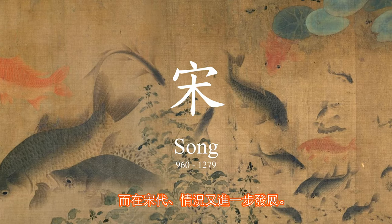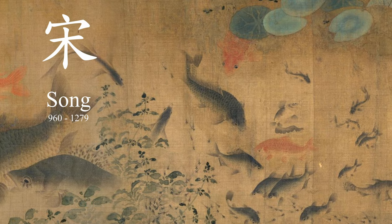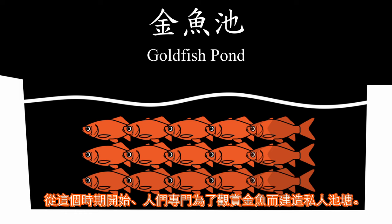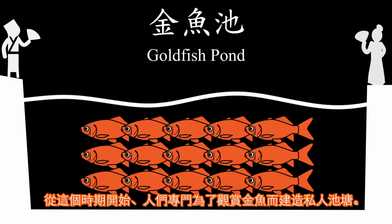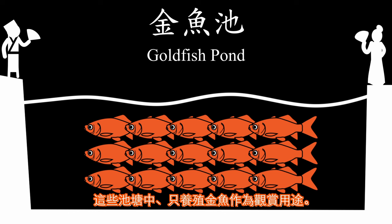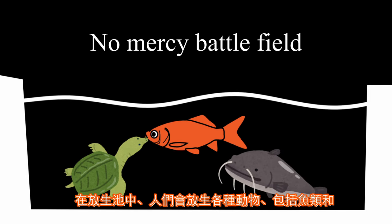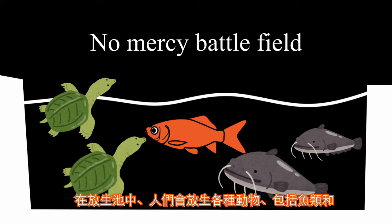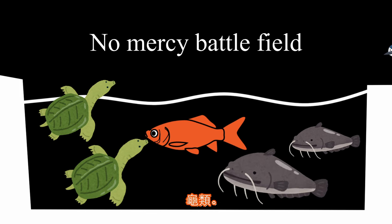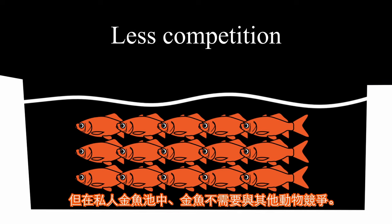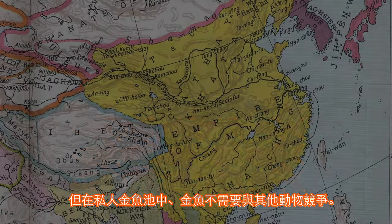The Carassius species with color mutations may have been recognized as special creatures with mysterious significance. The Tang Dynasty marks a significant period in the history of goldfish domestication. From this point on, people started building private ponds specifically for keeping only goldfish for viewing. Private goldfish ponds and the pond of mercy are totally different in the community of kept organisms. In the pond of mercy, people released different types of animals including other fish and turtles, so goldfish had to compete with these animals.